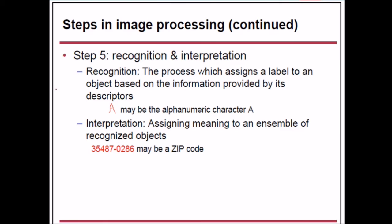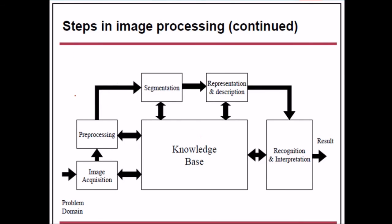Step 5 is recognition and interpretation. Recognition is the process that assigns a label to an object based on information provided by its descriptors — for example, identifying a letter. Interpretation means assigning meaning to an ensemble of recognized objects — for example, identifying a ZIP code. These are the complete steps: image acquisition, pre-processing, segmentation, representation and description, then recognition and interpretation.